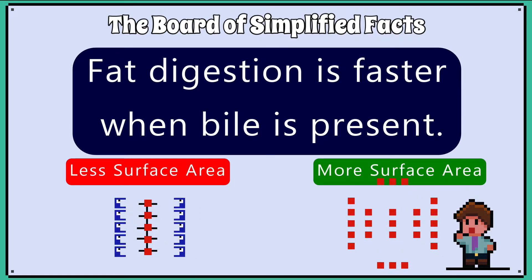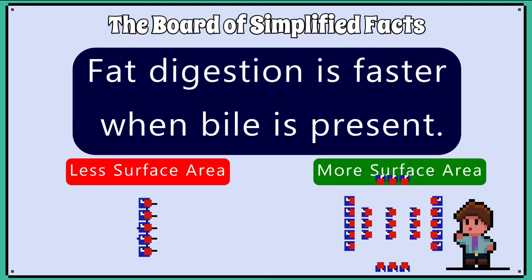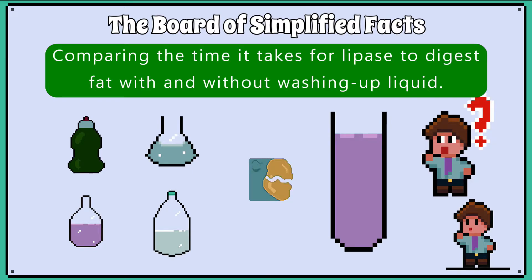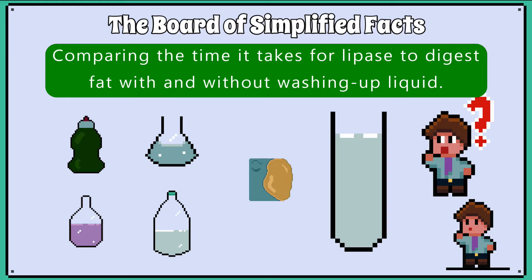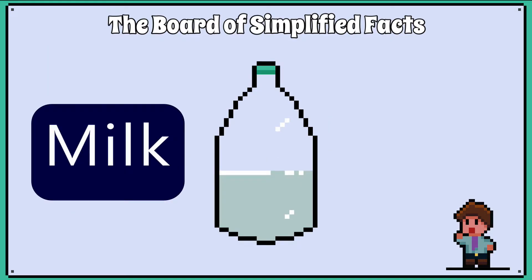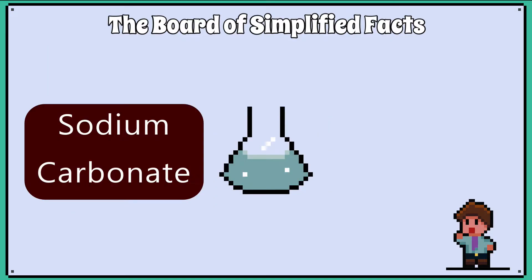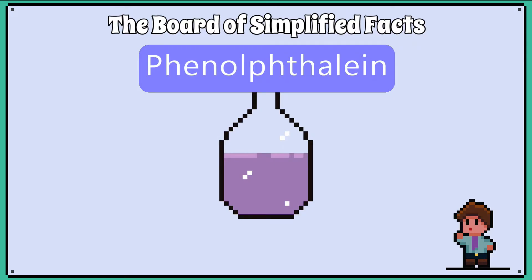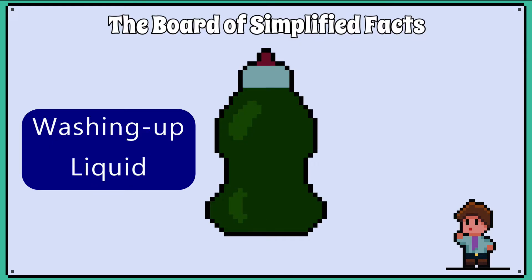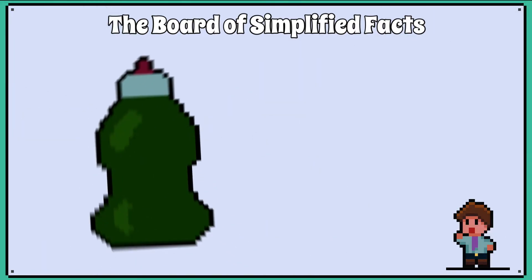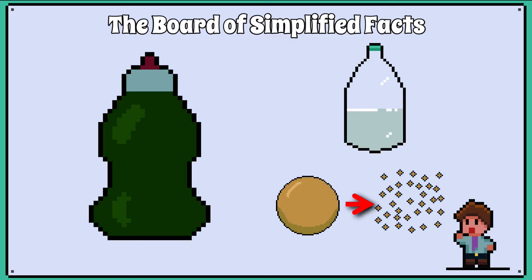Fat digestion is faster when bile is present. This experiment shows how emulsification can decrease the time it takes for fat to be digested by using milk, sodium carbonate, a pH indicator called phenolphthalein, and washing up liquid. Washing up liquid contains surfactants which emulsify the fat in the milk, and this will mimic what bile does.